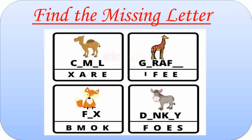Here the word is Camel. You can see some animals here. The missing letters are A and E. The word becomes C-A-M-E-L. Camel. Second, Giraffe. Missing letters are I, F and E. The word becomes G-I-R-A-F-F-E. Giraffe. In the third one, missing letter is O. That is F-O-X. Fox.